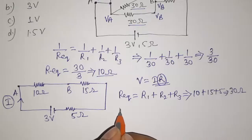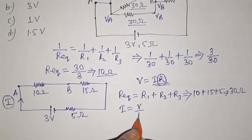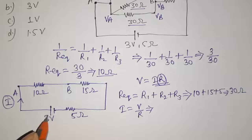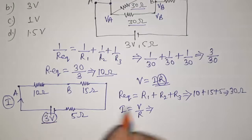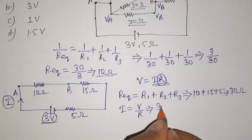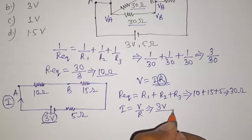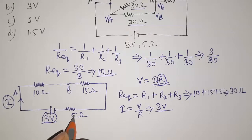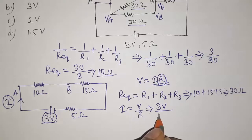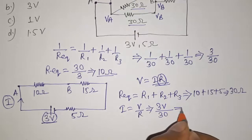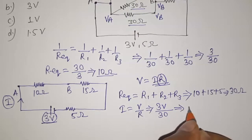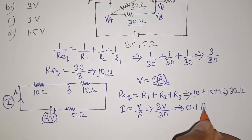The current I is given by V divided by R_equivalent. The potential difference is 3 volts and R_equivalent is 30 ohms, so I equals 3 divided by 30, which gives I equals 0.1 ampere.